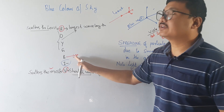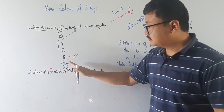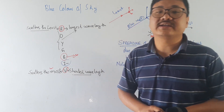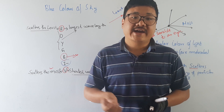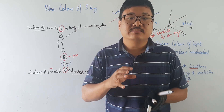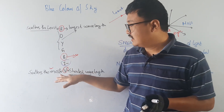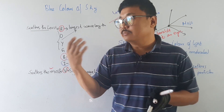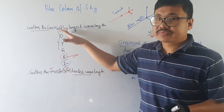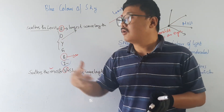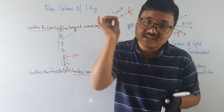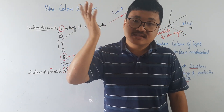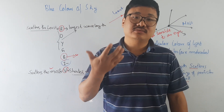Because blue also has a relatively shorter wavelength, it scatters quite a lot, and it is the most sensitive to our eyes, so we see blue. That is why the sky appears to be blue. But during sunset and sunrise, the sky appears red — why? That would be our next topic. Thank you.